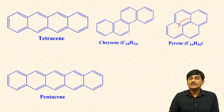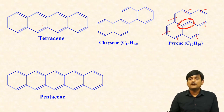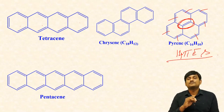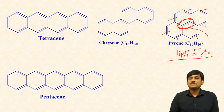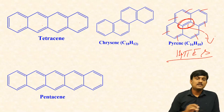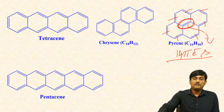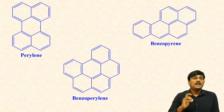In case of pyrene, one pi bond is not participated in the delocalization. So how many electrons are participated in the delocalization? One, two, three, four, five, six, and seven — so 14 pi electrons are participated in the delocalization. Even though pyrene has eight pi bonds, only seven pi bonds are participated in the delocalization. And pentacene, it has five benzene rings. And perylene — in this case, five benzene rings are fused.